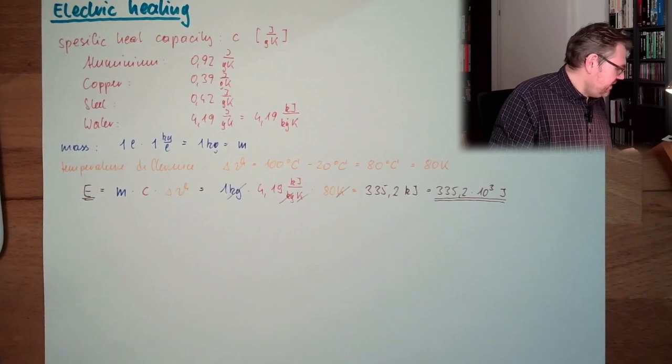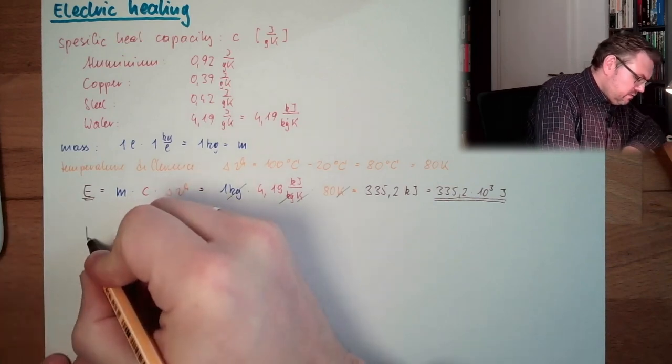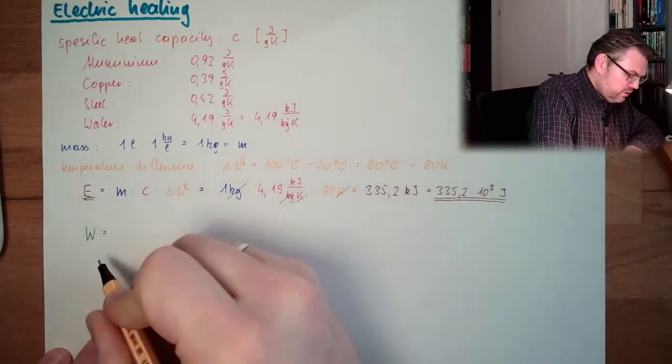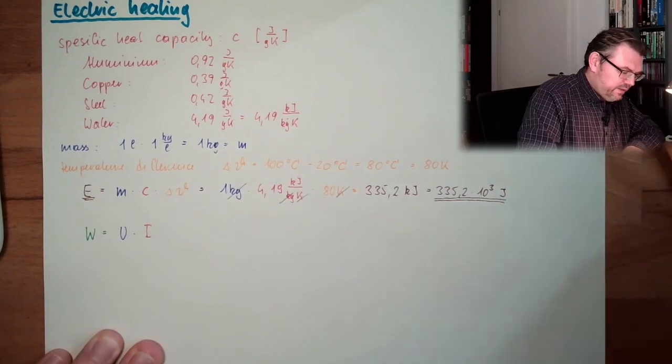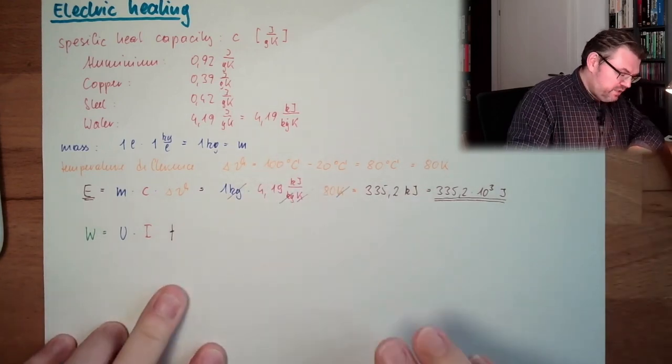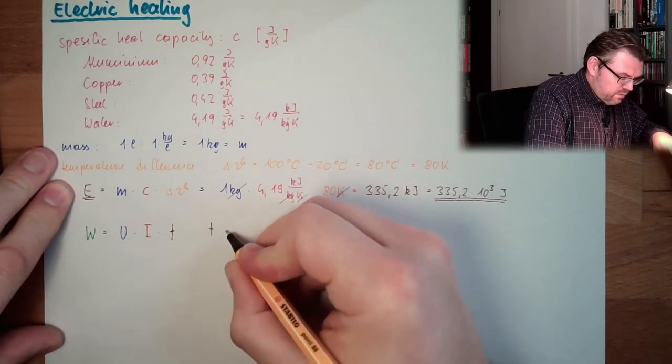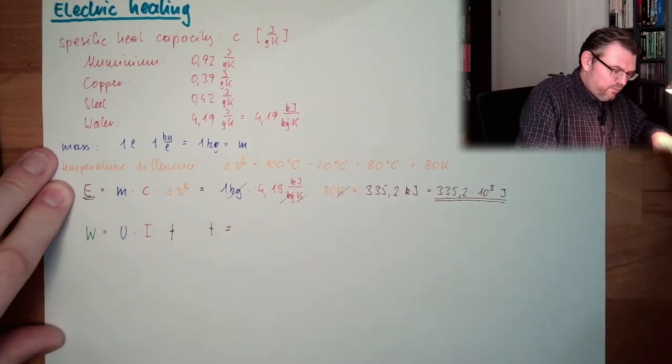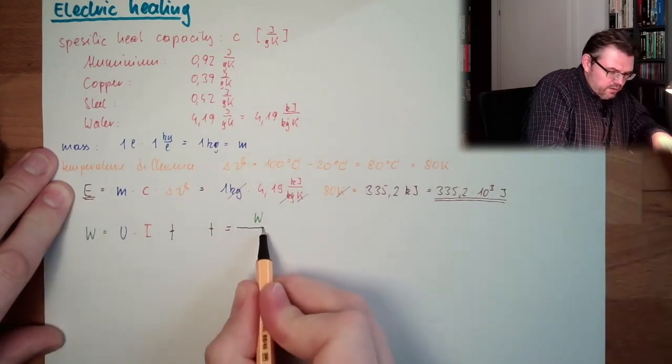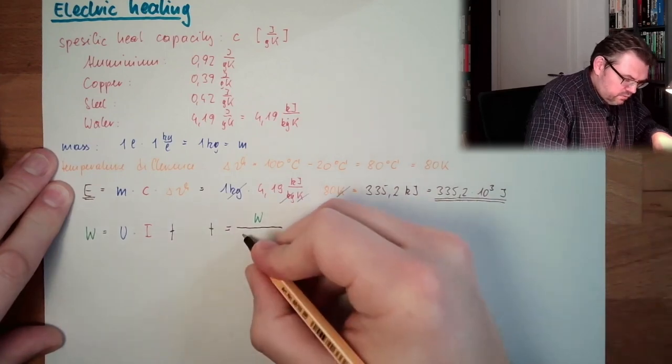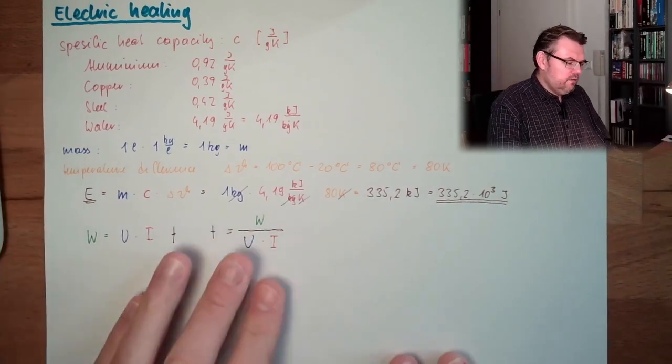And now, we said, this must be delivered by electricity. And the work from electricity was voltage multiplied by current multiplied by time. So, we want to know the time, how much it takes to reach this amount of energy. We have to write it like that. That's the work, the needed work, this is the energy I need for the water, divided by voltage and current.